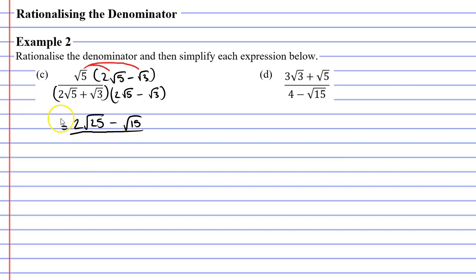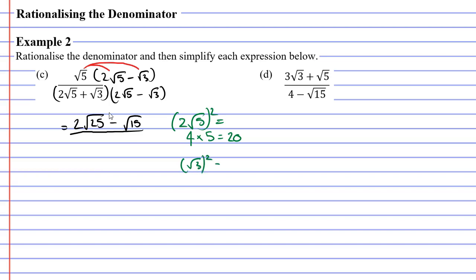Let's focus on the denominator. We've got two terms — 2 root 5 and root 3 — the same two terms in each set of brackets. We're going to square each term. Squaring 2 root 5: 2 times 2 is 4, and squaring the square root of 5 gives us back 5, since squaring undoes the square root. So we get 4 times 5, which is 20. The other term is root 3: squaring the square root of 3 gives us 3. We now have 20 and 3, and we simply subtract them.